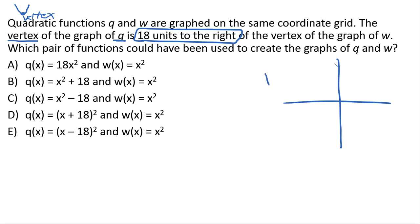So if q is 18 units to the right of w, let's do w in green. If w were here, that's x squared, then q, which is to the right, would have to be way over here somewhere, 18 units to the right. So we're going to graph both functions and we're going to have to go through the answer choices, a through e, and find out which one makes q 18 to the right of w. So let's call all of our q's y1 and let's call all of our w's y2 because we're going to type these in our calculator here in a second.